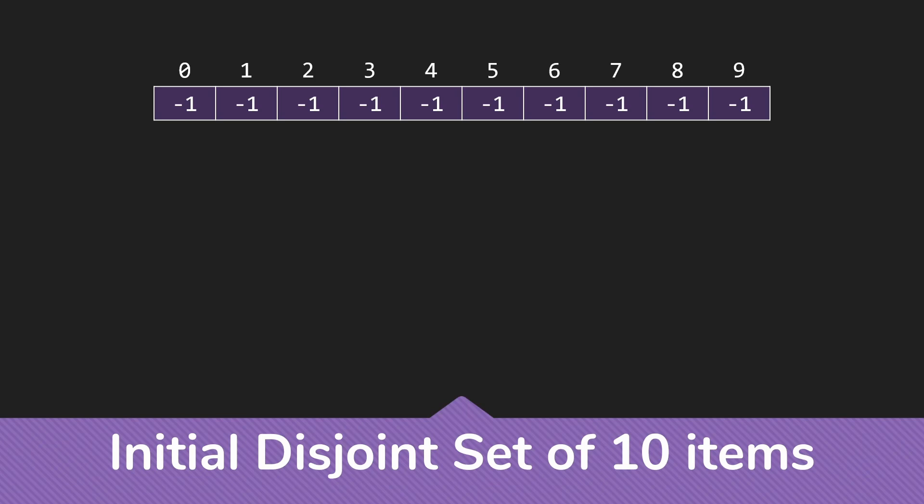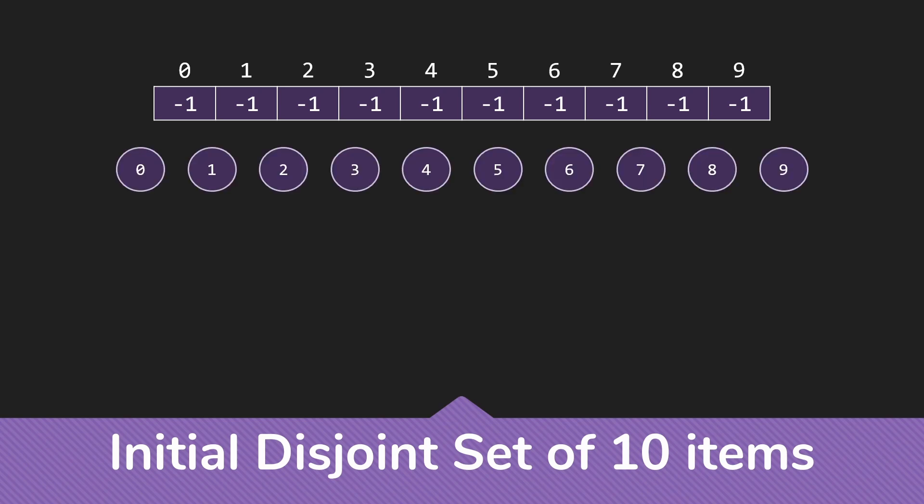So this is what an initial disjoint set of 10 items would look like. We have 10 different sets and 10 different trees — each item is the root of its own tree. Here's a graphical representation of those 10 trees.